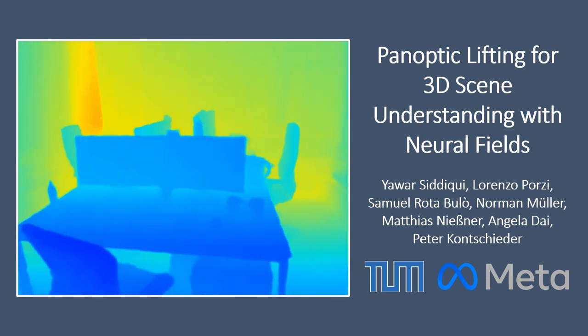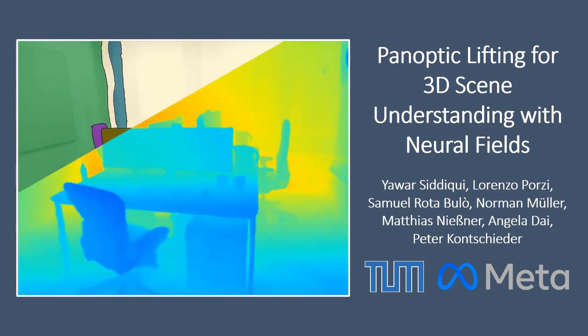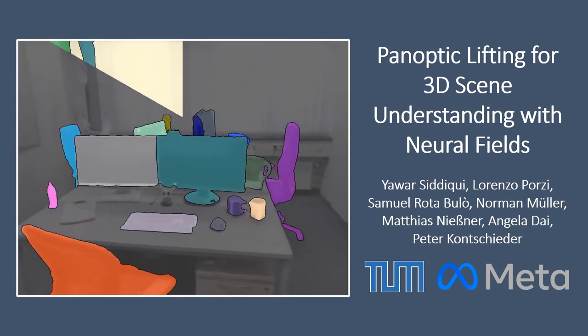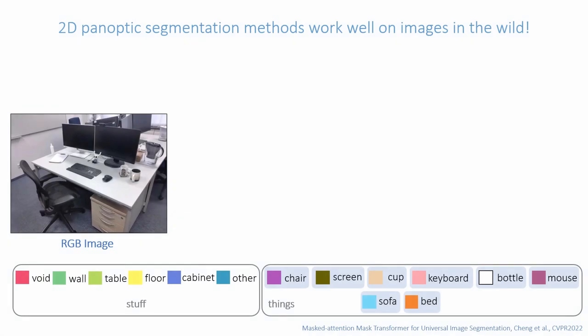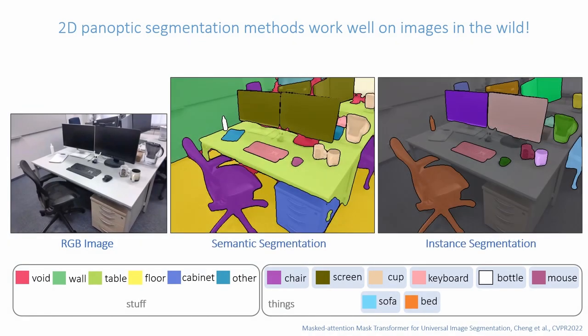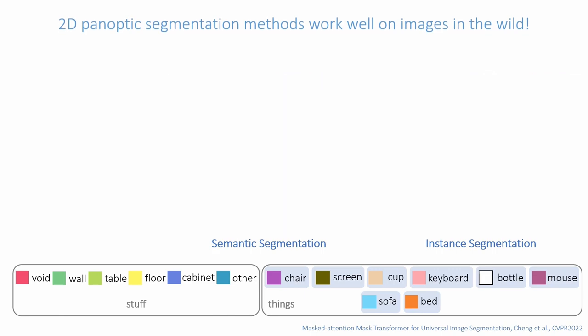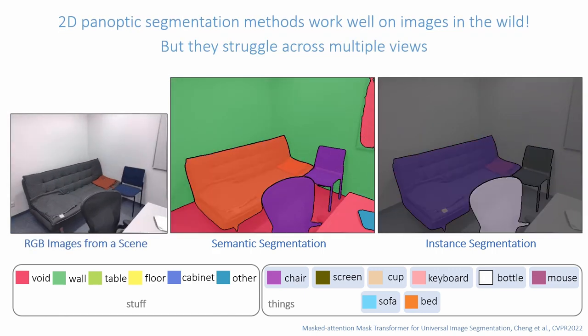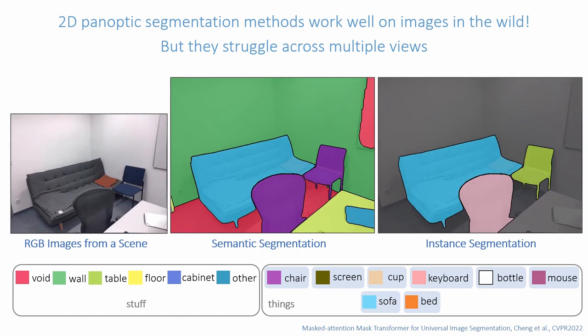We present Panoptic Lifting for 3D scene understanding with neural fields. With the availability of large-scale labeled 2D data and advances in model architectures, state-of-the-art 2D panoptic segmentation methods perform well even for images in the wild. However, when applied on multiple views from a scene, they can exhibit issues like inconsistencies in predictions across views.